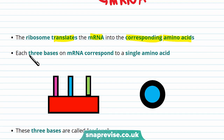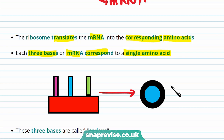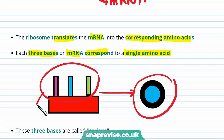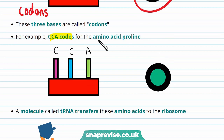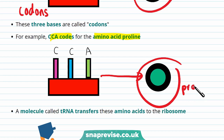Each three bases on mRNA correspond to a single amino acid. For example, these three bases on mRNA code for a specific amino acid. These three bases are known as codons. For example, the codon CCA codes for the amino acid proline. This means mRNA is read in threes, as each three bases code for a specific amino acid — in this case, proline.